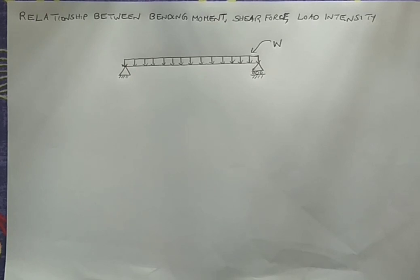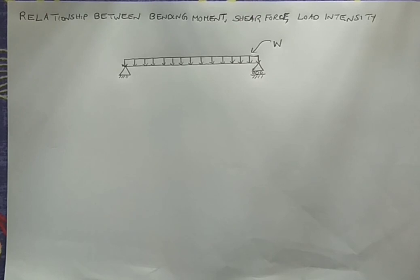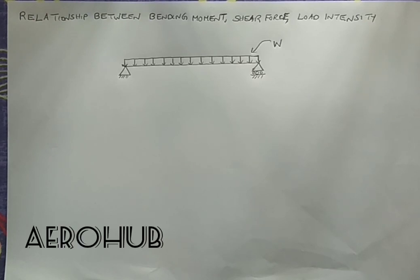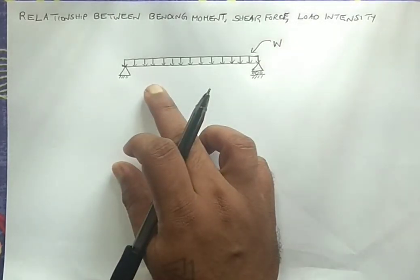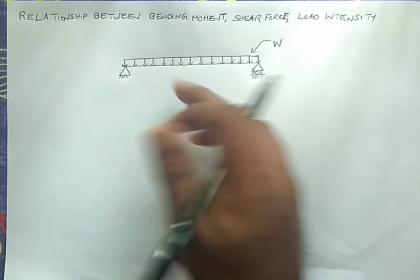Hello everyone, welcome back to AeroHub and welcome to this series of lectures in airframe structural analysis. From this lecture we will be starting the second unit: shear of open and closed section beams. You will be introduced to terms like shear flow and idealization of structures. To understand shear flow, we need to understand the relationship between bending moment, shear force, and loading condition. We will derive this relationship using a simply supported beam subjected to a uniformly distributed load of intensity W.